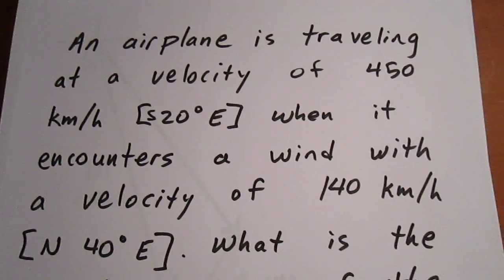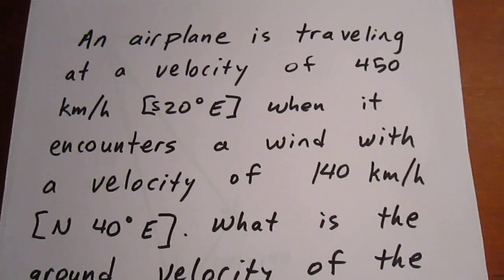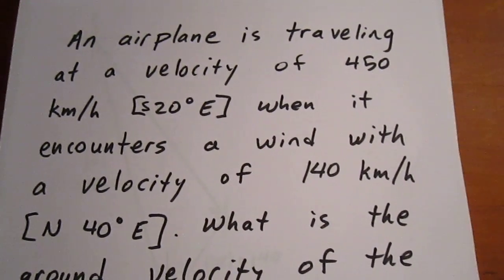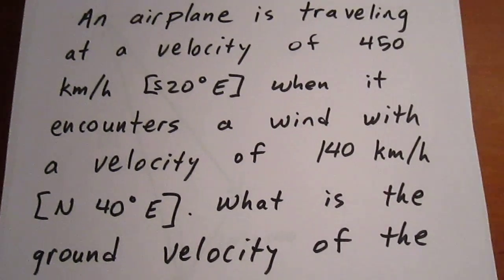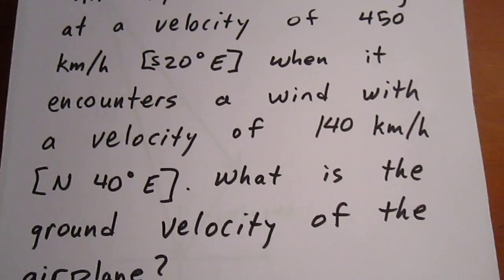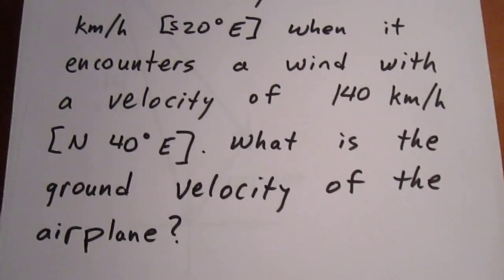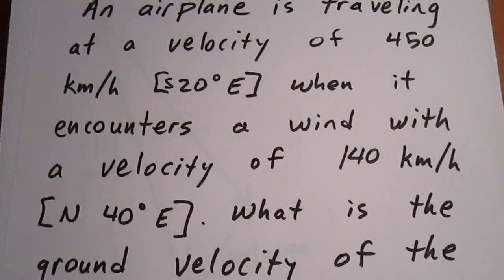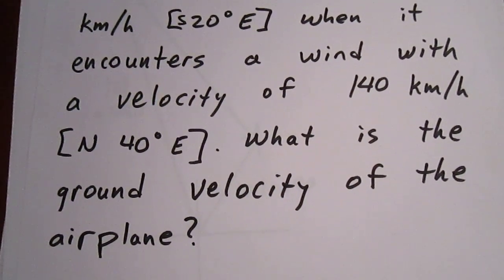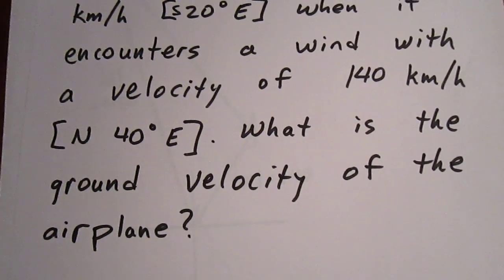In this question we have an airplane traveling at a velocity of 450 kilometers per hour in a direction south 20 degrees east, encountering a wind with a velocity of 140 kilometers per hour in a direction north 40 degrees east. We want to know the ground velocity of the airplane.